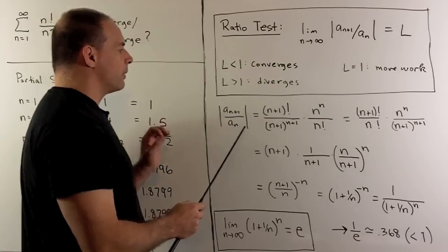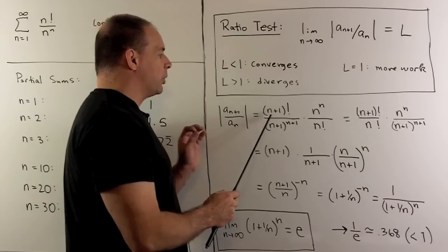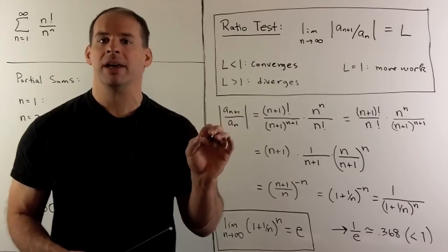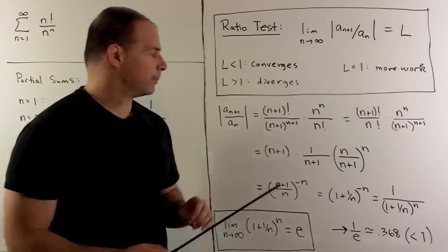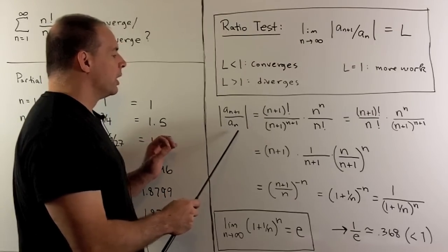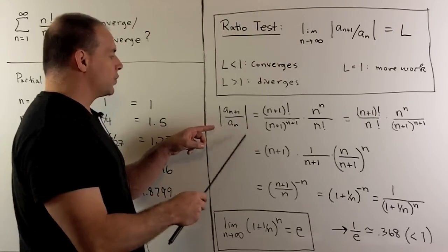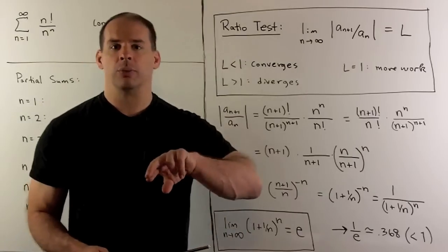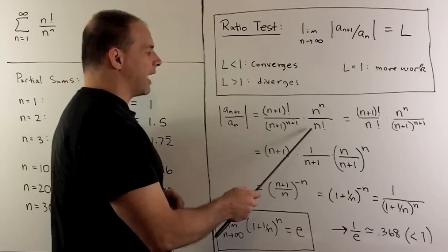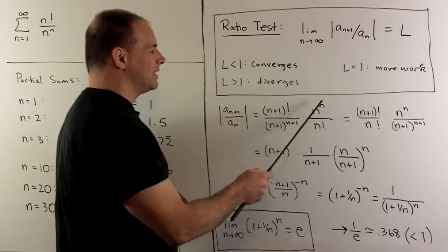If I take the n plus first term, wherever I see an n, I put n plus 1. So we have n plus 1 factorial over n plus 1 to the n plus first power. If I'm going to divide by the nth term, I'm just going to put our nth term in the bottom, and since it's a fraction, we just flip the denominator up to the numerator. So we're going to have n factorial under n to the nth power.